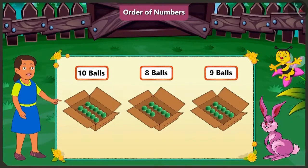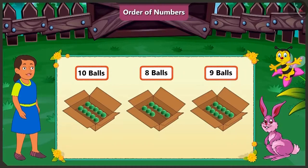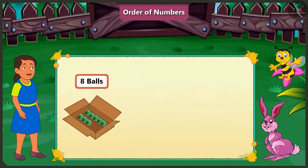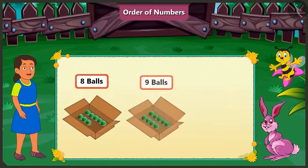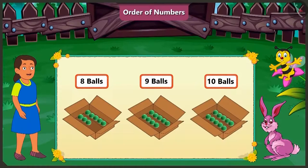Now tell me, how do we say 10, 8, 9 in the order of counting? Yes, while counting we first say 8, then we say 9 and 10. Absolutely right, honey. It is said in the order of 8, 9, 10.